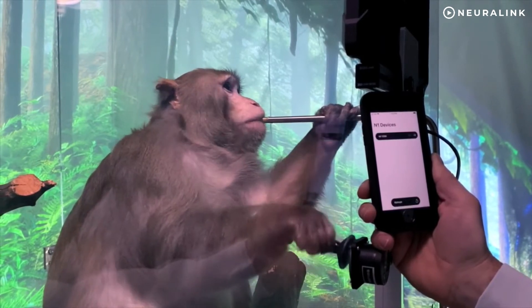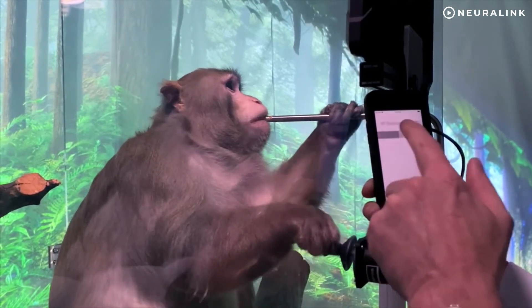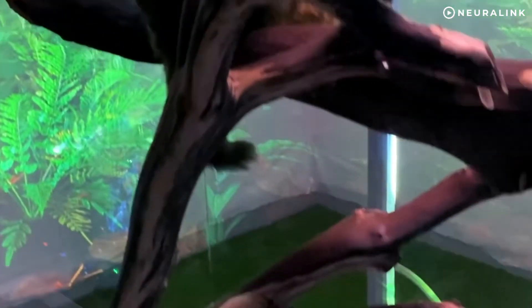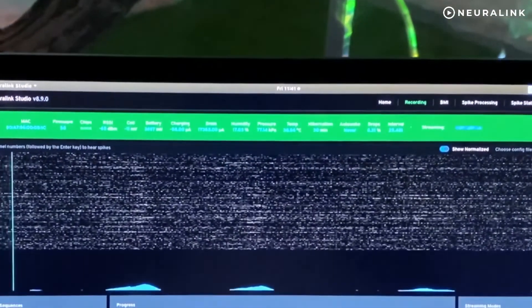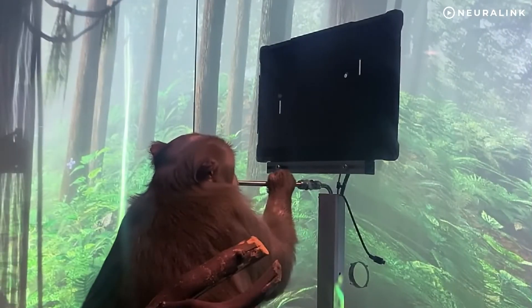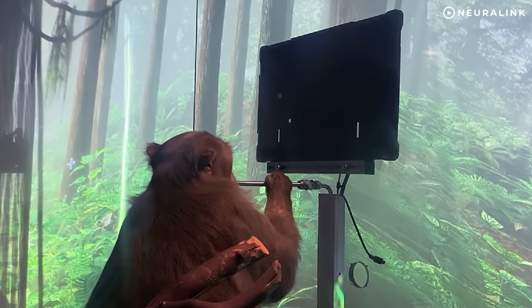While he was doing this, the Neuralink device recorded information about which neurons were firing to control the movement and learning, essentially to predict hand movements by recording which regions fired. After learning the patterns, the joystick was disconnected from the computer, and the monkey continued to play the game only using its mind.